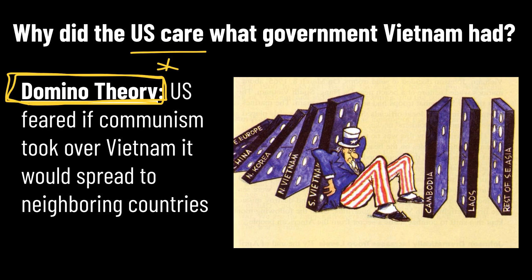We cared about what government Vietnam had because we were really worried that if countries like Vietnam became communist, it would spread. It would, like dominoes, knock over other neighboring countries. And all of a sudden, we don't just have Vietnam to worry about — we have Vietnam and Cambodia and Laos and Korea and China, and we are fighting a losing battle.